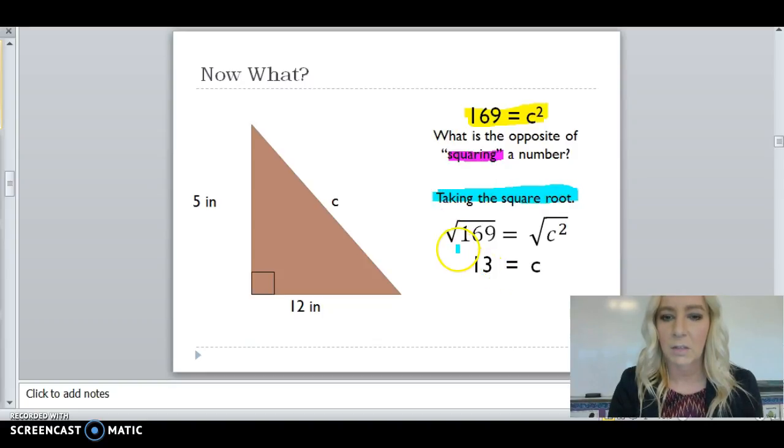So, if I take the square root of 169, and the square root of C squared, the 2 and the square root cancel out to just C, and the square root of 169 is 13.